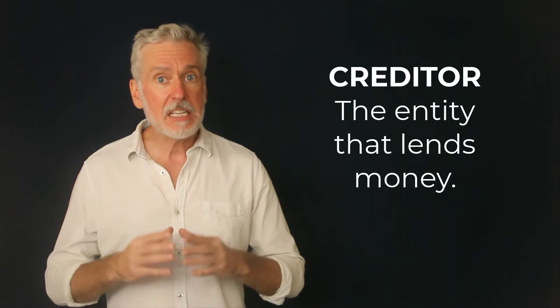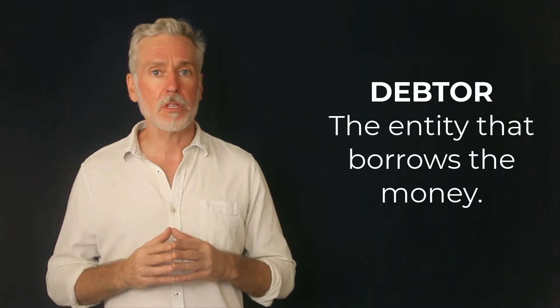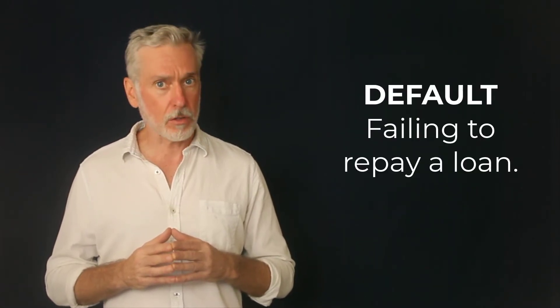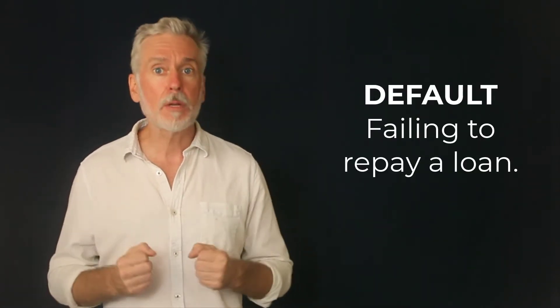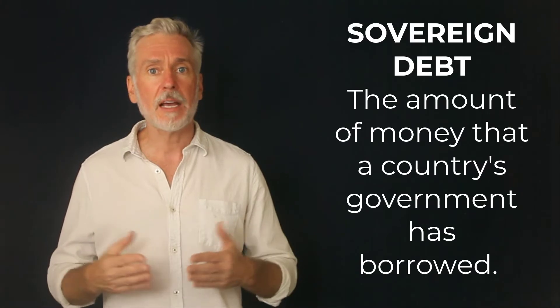Okay, let's get started with the key vocabulary. Then you'll hear a short text for listening practice. The new vocabulary is this: Creditor, the entity that lends money. Debtor, the entity that borrows the money. Default, failing to repay a loan. Sovereign debt, the amount of money that a country's government has borrowed.